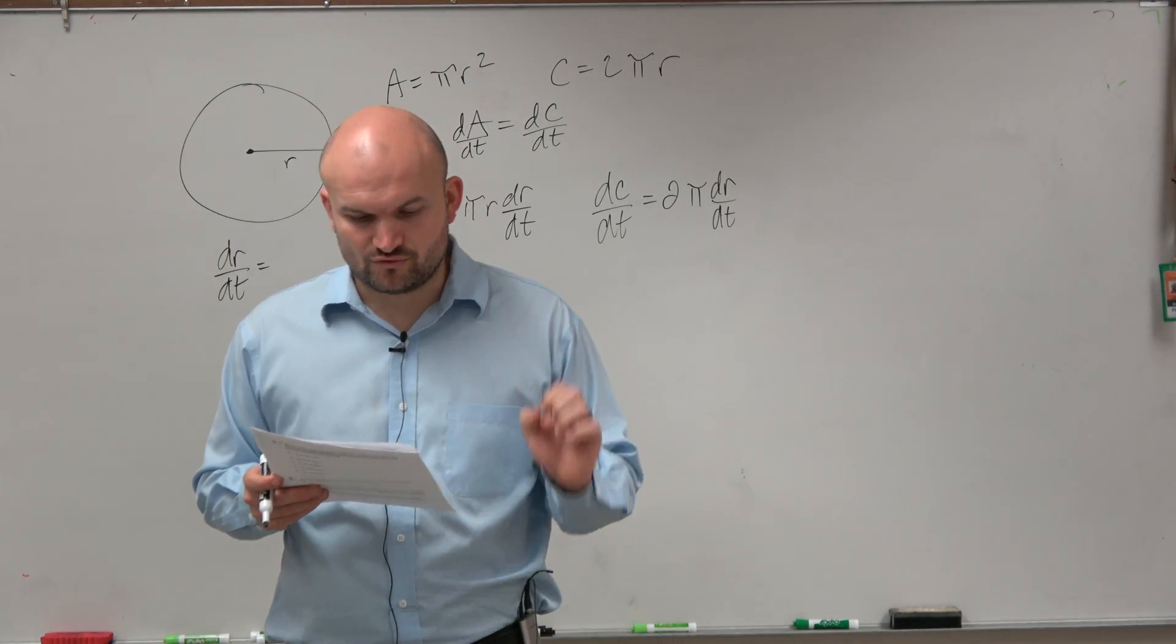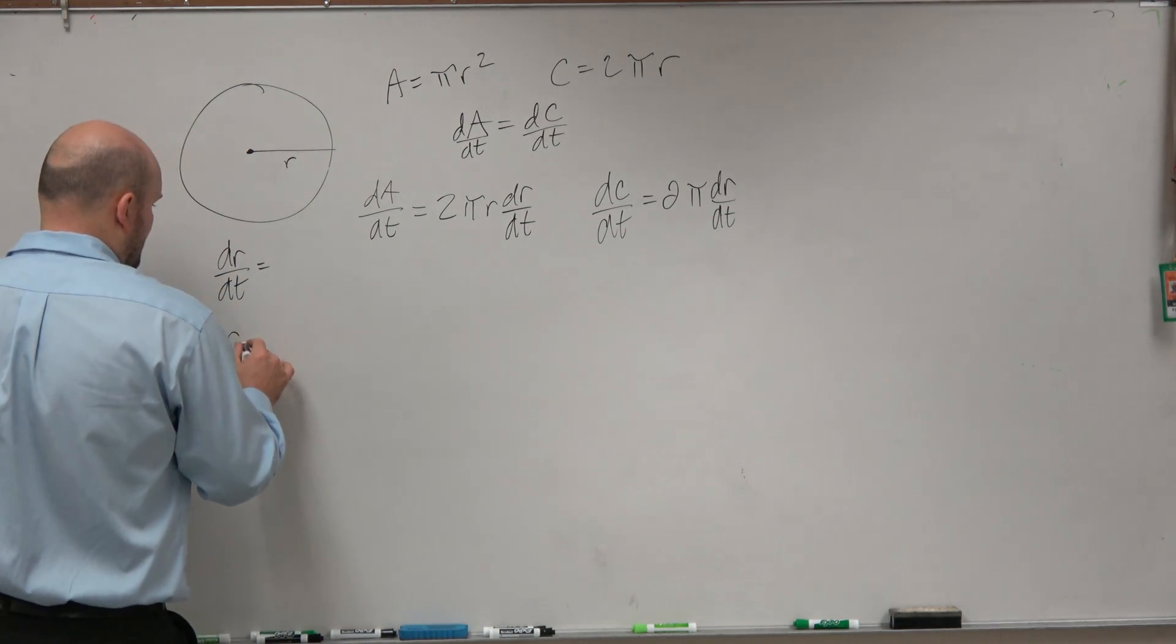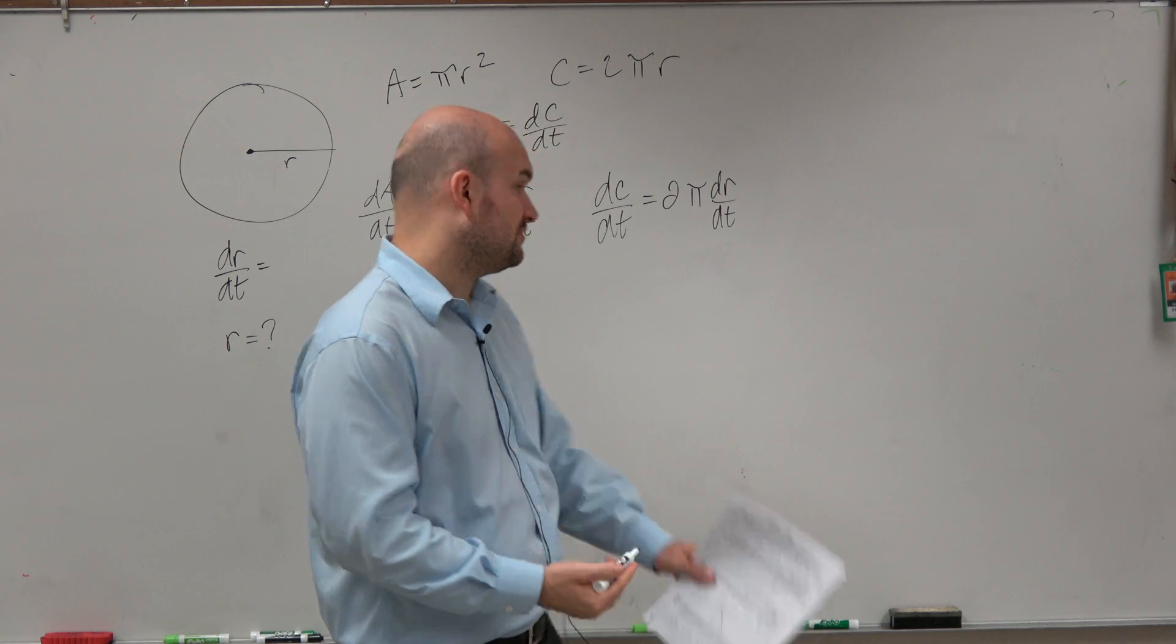It says, at this instant, the radius of the circle is. So actually, what we're looking for is we're looking for what r is. OK? So that's what we're trying to solve for.